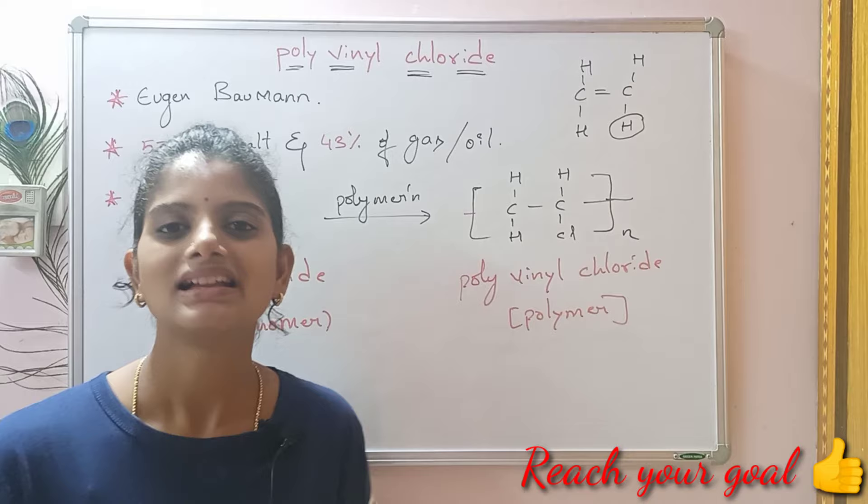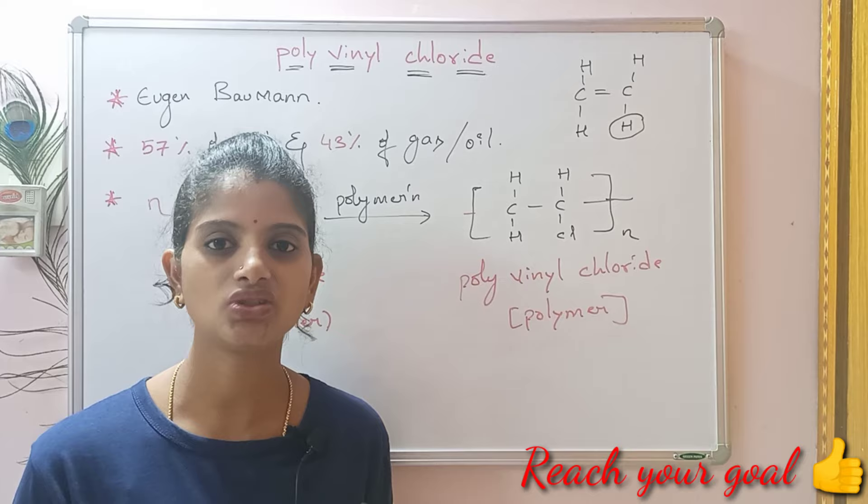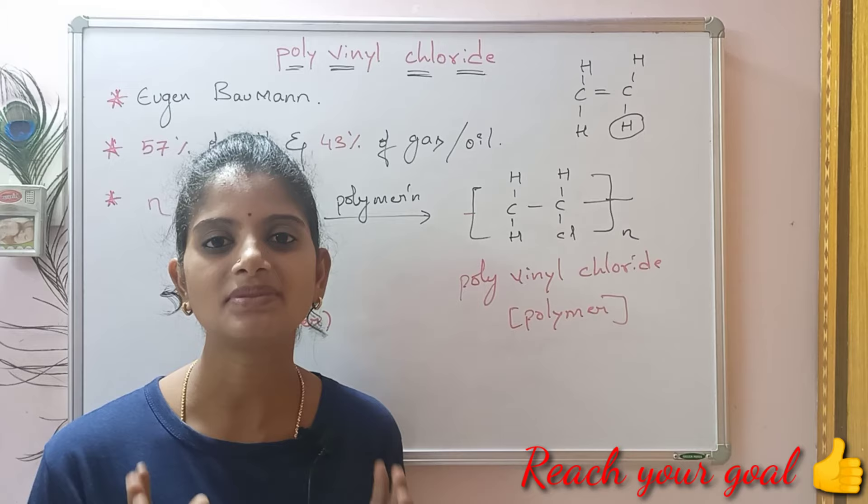Commercially, it is produced by three techniques: bulk polymerization, suspension polymerization, and emulsion polymerization. However, suspension polymerization produces the largest amount of polyvinyl chloride. Today, polyvinyl chloride has become the second largest commodity plastic after polyethylene.